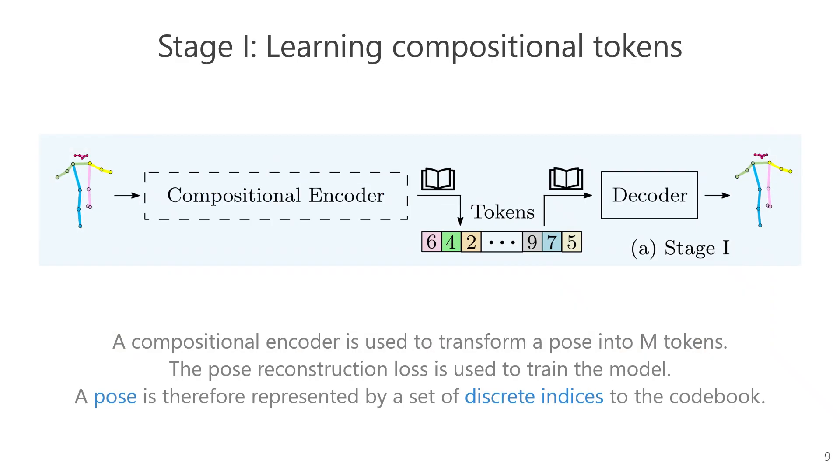During the first stage, we train the encoder, decoder, and codebook through pose reconstruction. Initially, we utilize a compositional encoder to integrate the information from individual keypoints, resulting in M features. Subsequently, these features are quantized into M tokens using a codebook. The tokens can then be restored to features using the same codebook, and a shallow decoder is employed to reconstruct the original pose. In this way, a pose is represented as a set of discrete indices referring to the codebook.